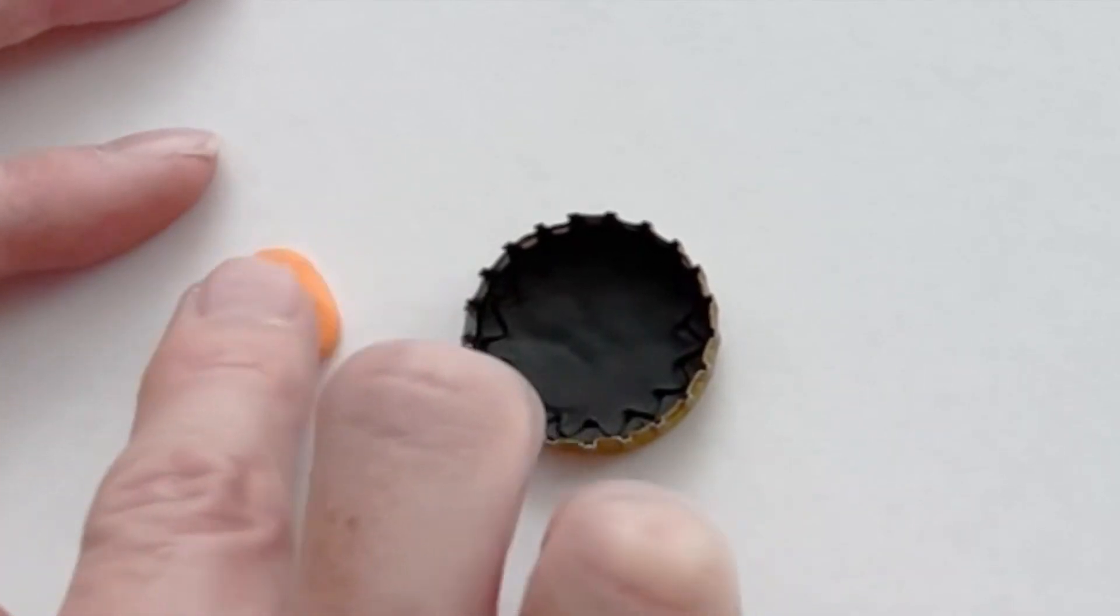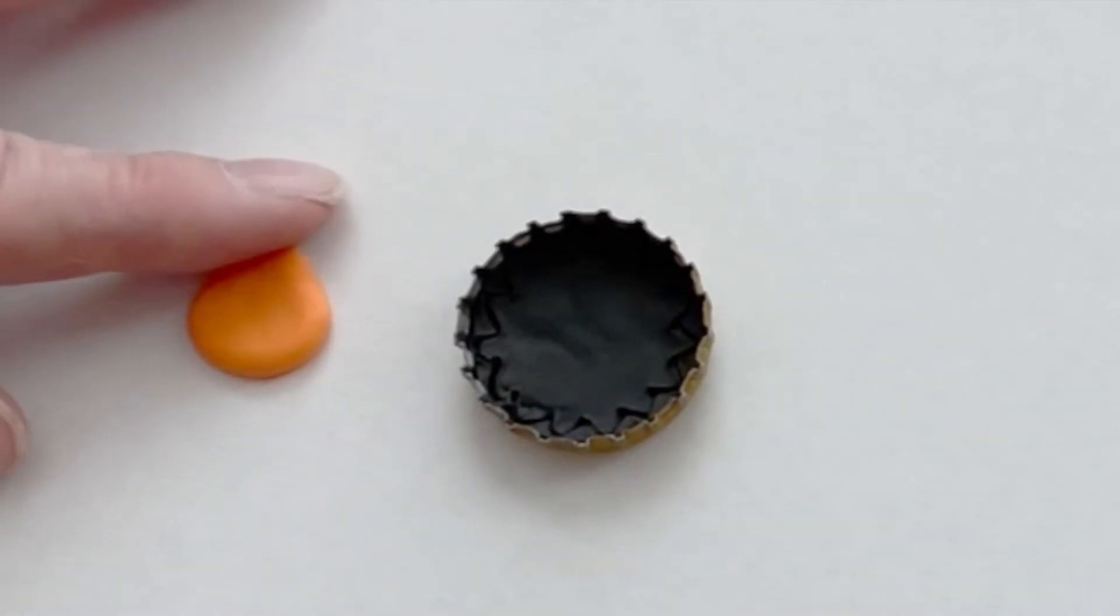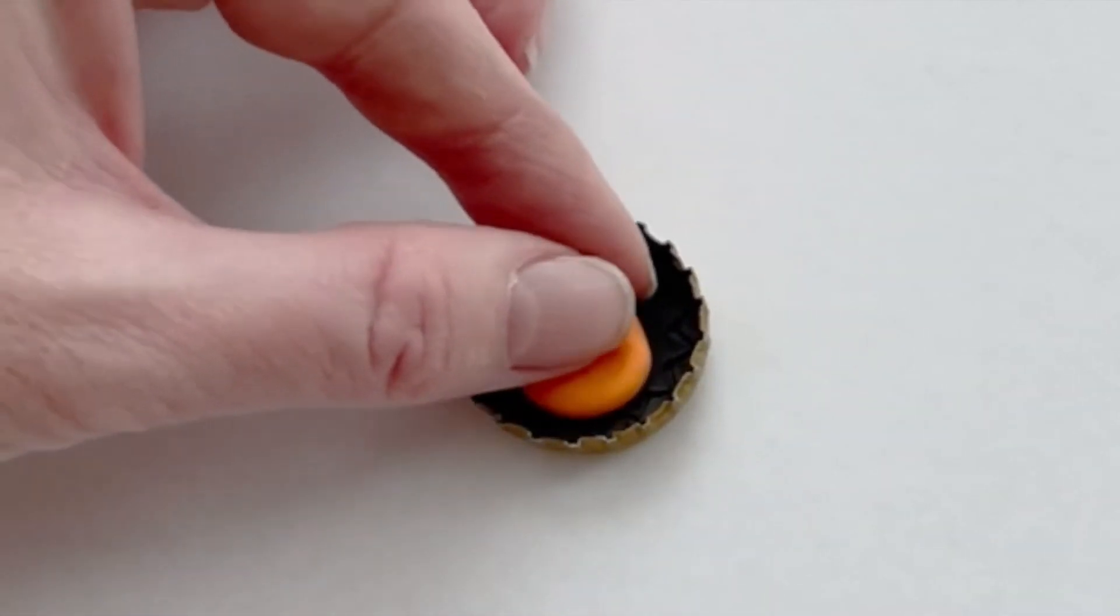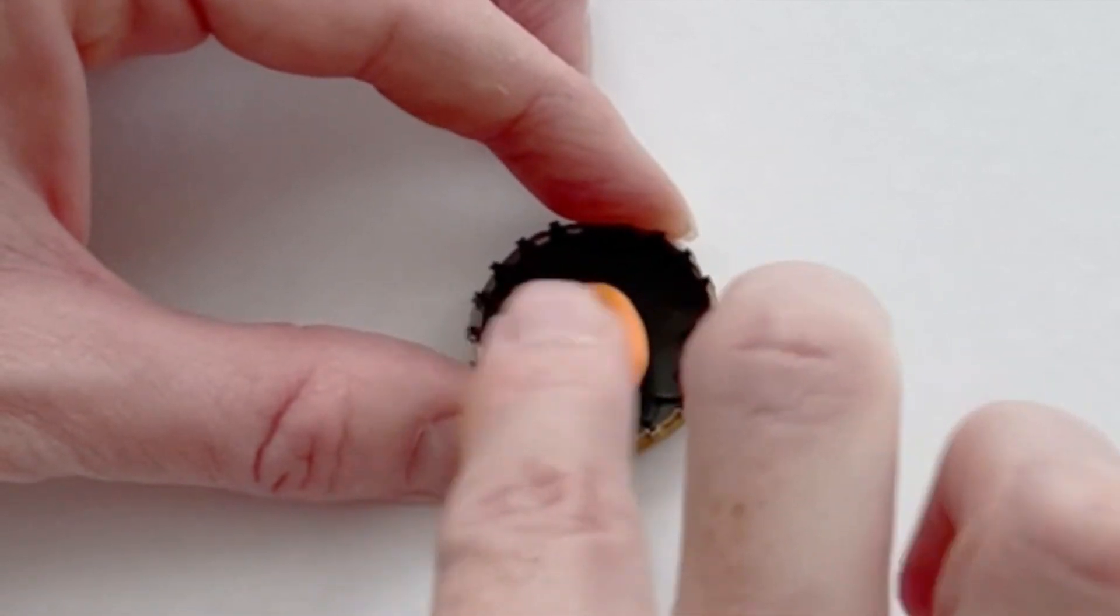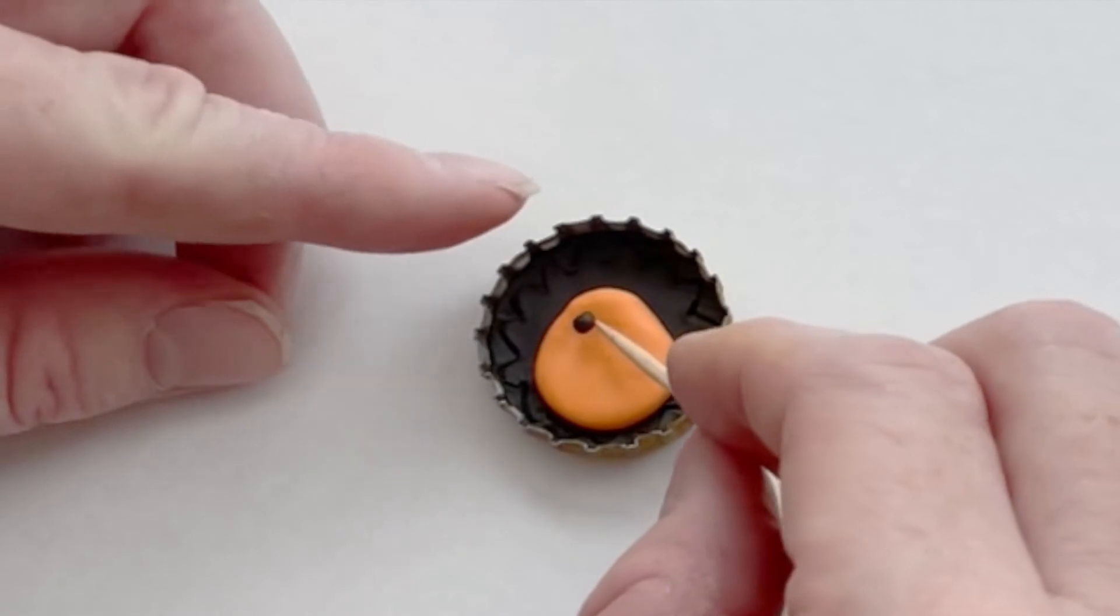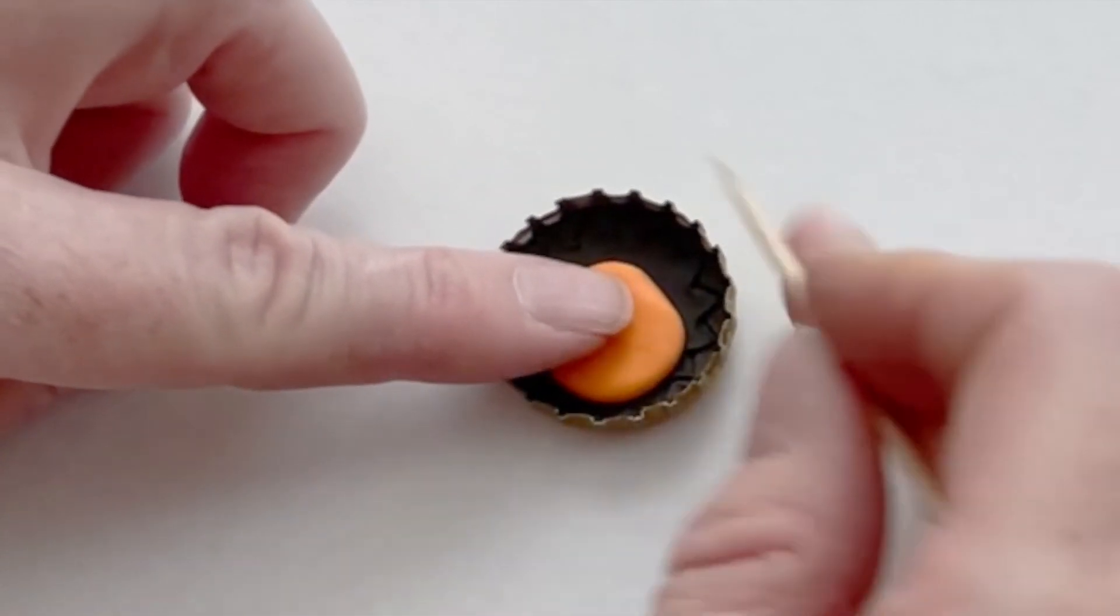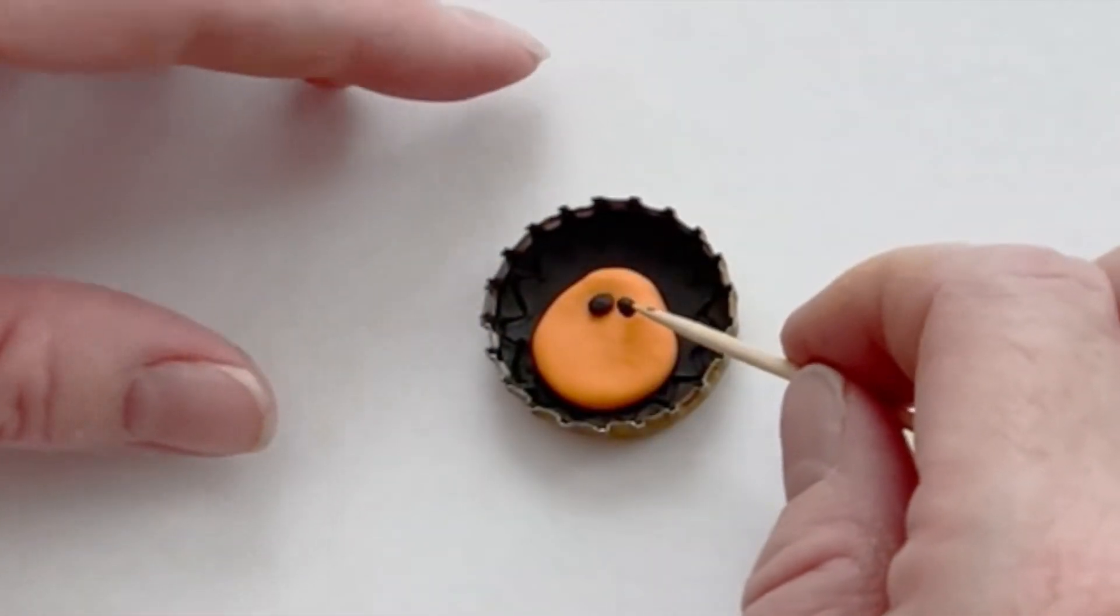Take a tiny piece of orange clay and form a pumpkin shape. Press it onto the background. Make eyes by getting tiny balls of black clay and placing them for the pumpkin's eyes and mouth.